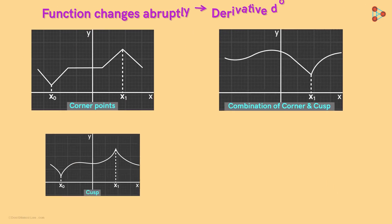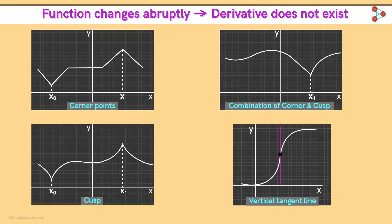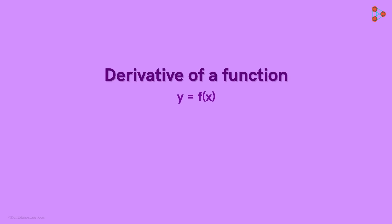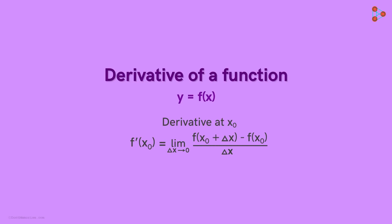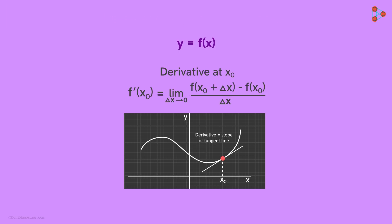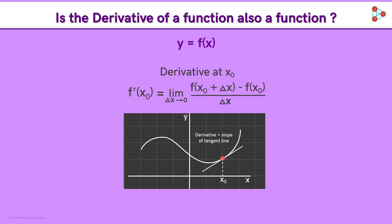So we saw different types of situations where the derivative of a function does not exist. At these points, the function changes suddenly or rapidly, so we cannot approximate the graph around such points by a straight line to find the rate of change. Now let me ask you a question: so far we have learned that for a function, we can find its derivative at a particular value of x — it is equal to the slope of the tangent line at that point on the function's graph. The important question is: is the derivative of a function also a function? Share your thoughts in the comment section below, and subscribe to our channel to keep learning.